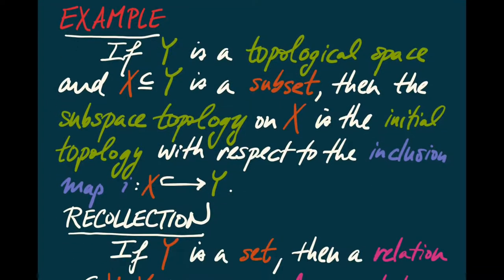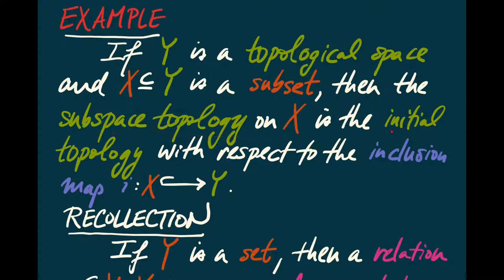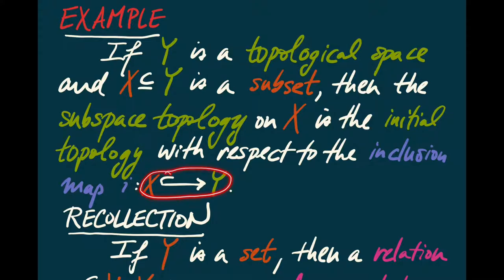What we're going to do now is look at the dual of the subspace construction. Instead of an injective map from X into an existing topological space to build a topology on X, we're going to look at a surjective map out of an existing topological space to our X, and use that to give us a topology on X.